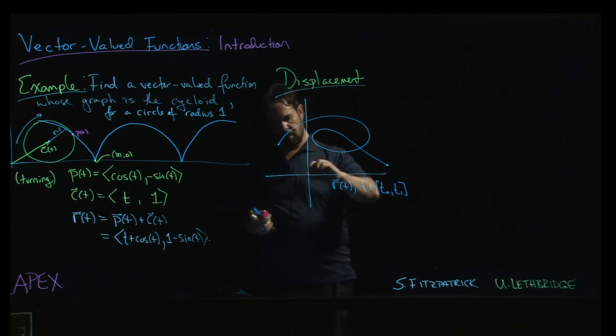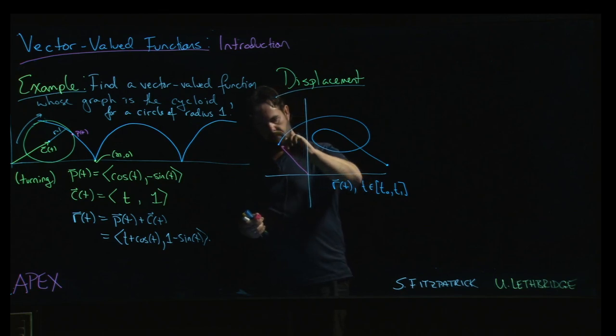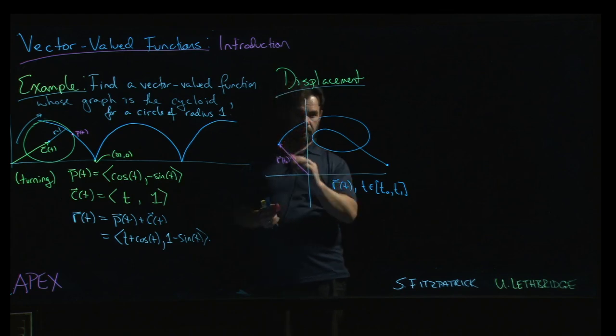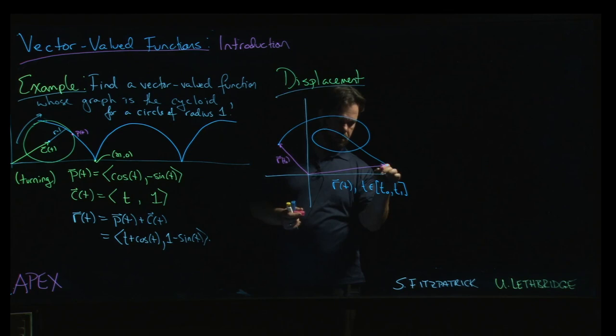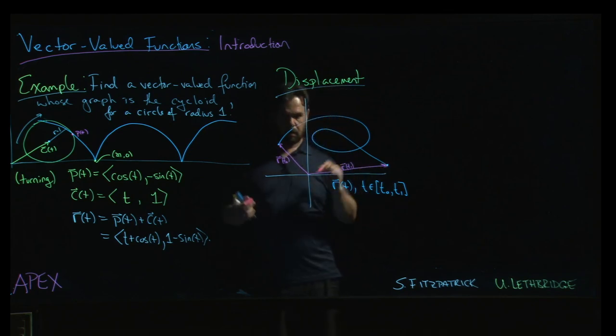And so you'd have r(t0), position vector for the initial point. Over here, you've got r(t1), position for the final point.